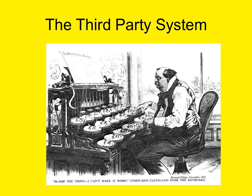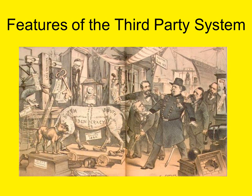The second party system came to a demise as a result of the emergence of slavery in the 1850s as the single most divisive issue in American politics. Disagreements over slavery led to the split of the Democratic Party into northern and southern factions, and the newly emergent Republican Party, led by Abraham Lincoln, exploited this divide to win the presidency in 1860. The image on this slide is an 1893 American cartoon depicting President Grover Cleveland unsuccessfully attempting to manipulate the machinery of the Democratic Party.